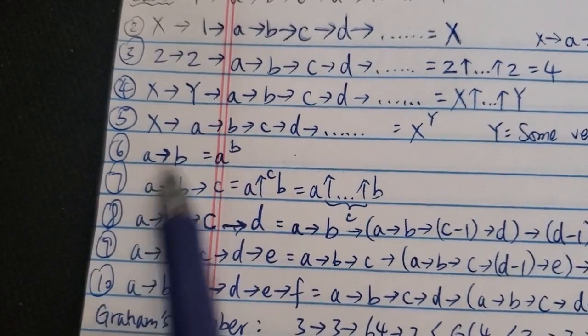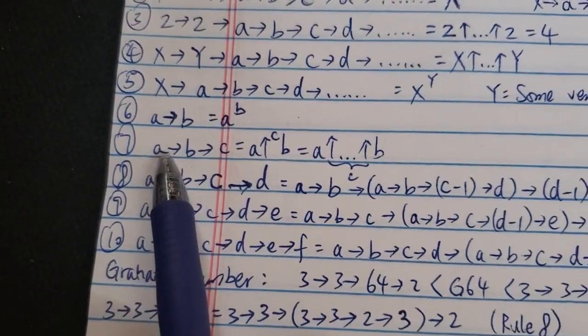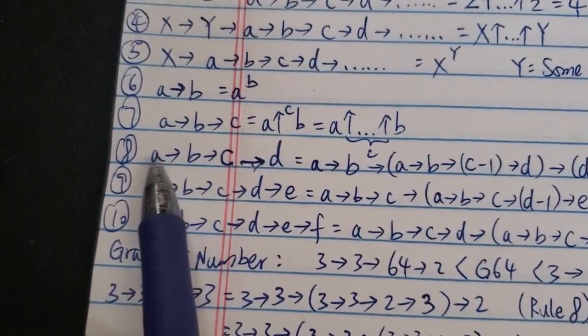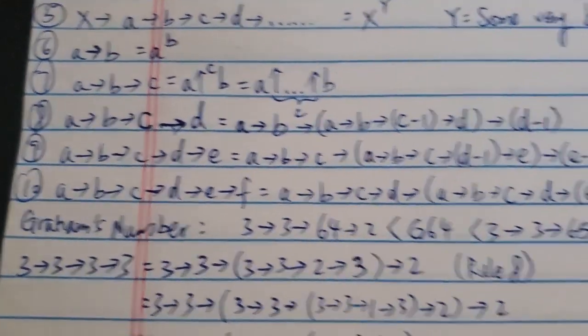And then rule six, so the basic one: A→B is just equal to A to the power of B. A→B→C is just equal to A with C number of arrows B. And then rule eight...